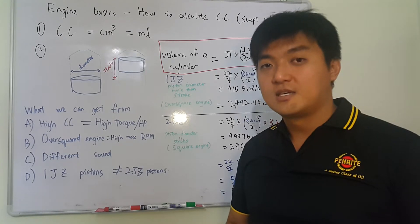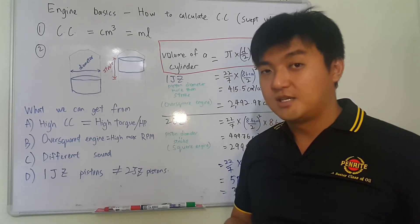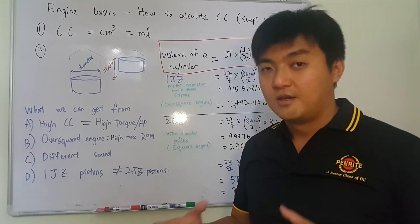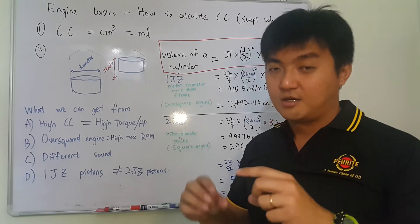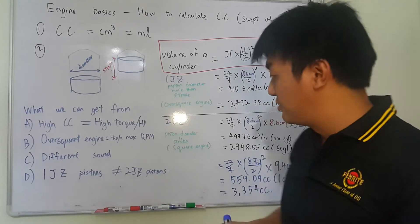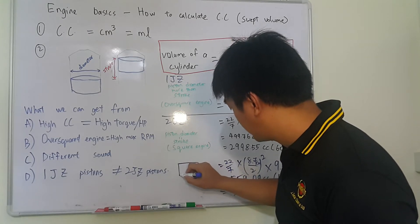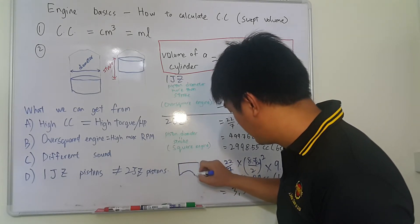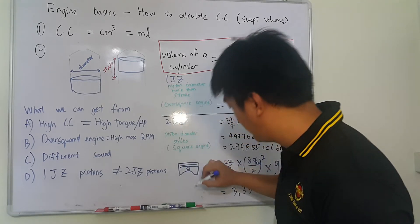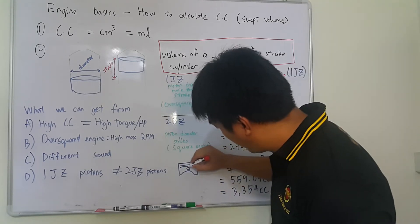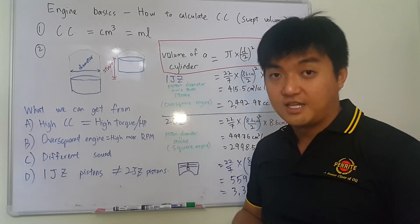One more tip for you guys is, even though one JZ piston diameter and two JZ piston diameter is the same, but both of them are not interchangeable. Because of the height of the piston pin to the height of the top of the piston. This one is the piston pin. The height of the piston pin to the top is different for one JZ and two JZ.